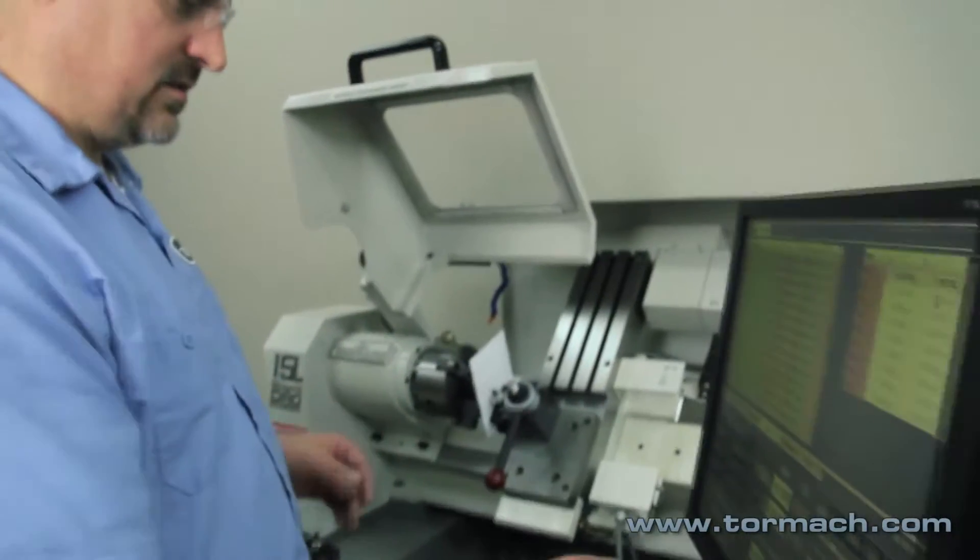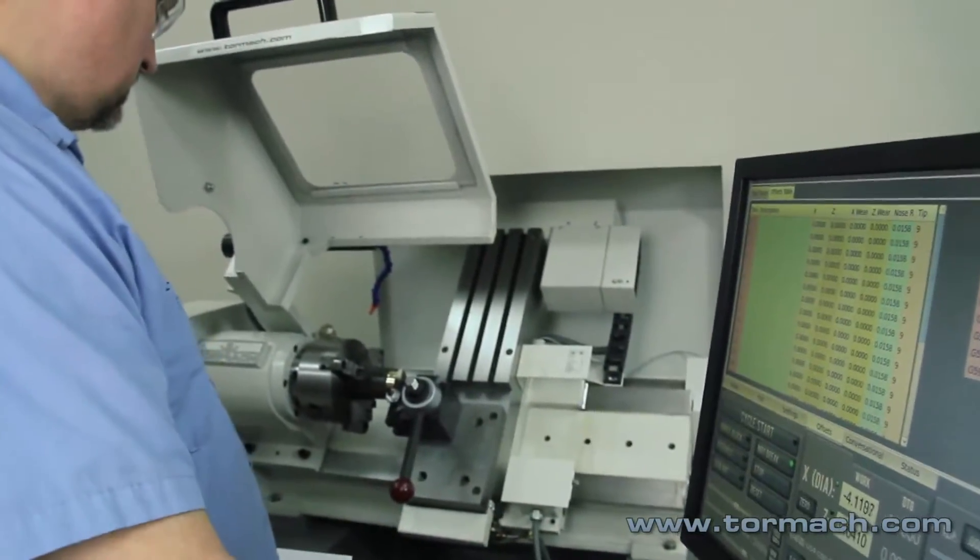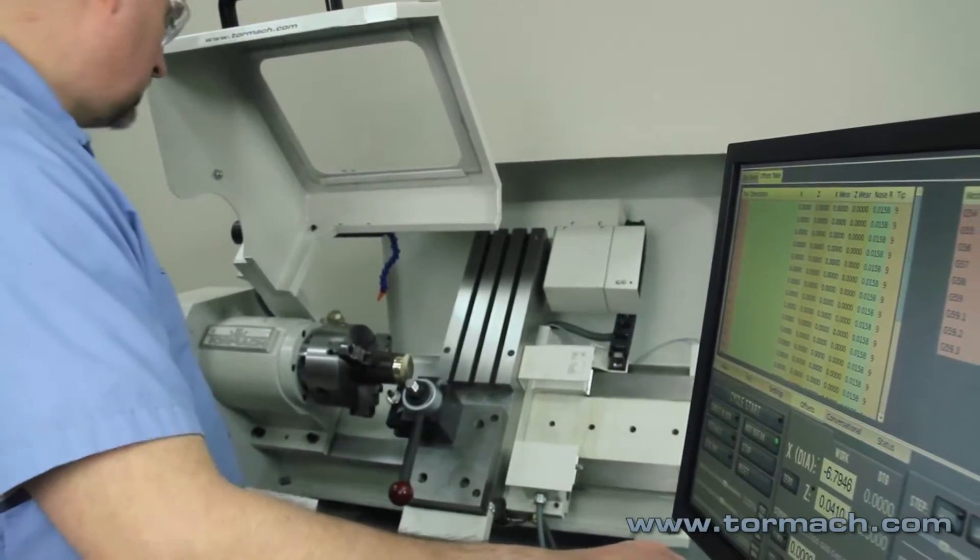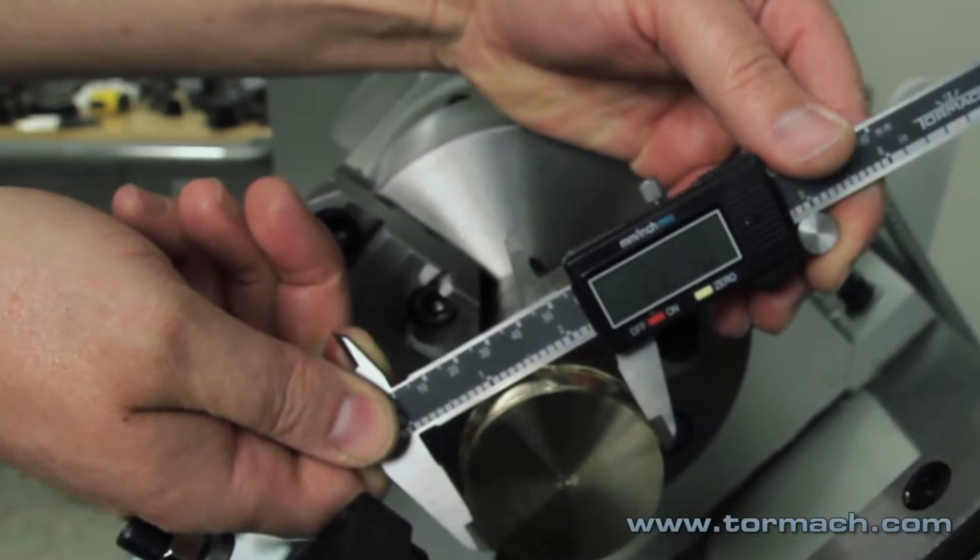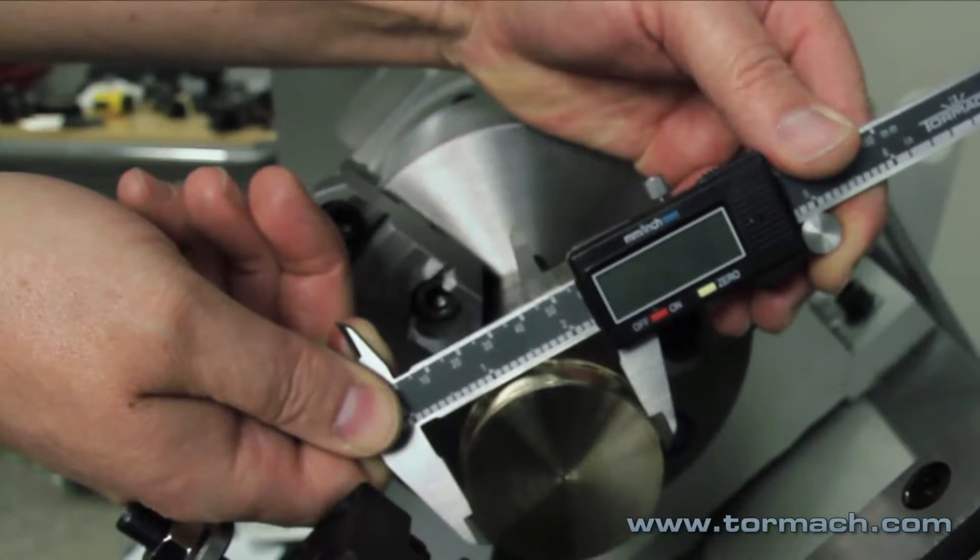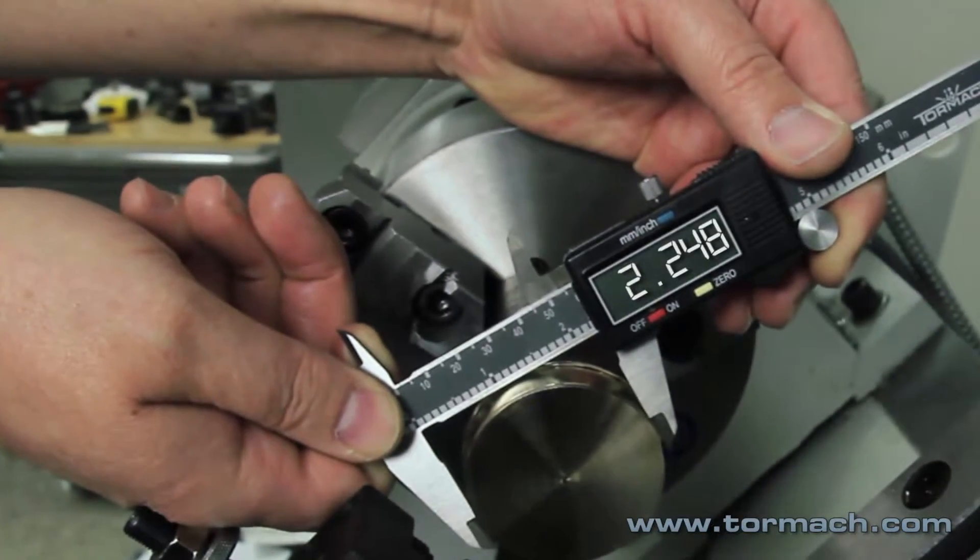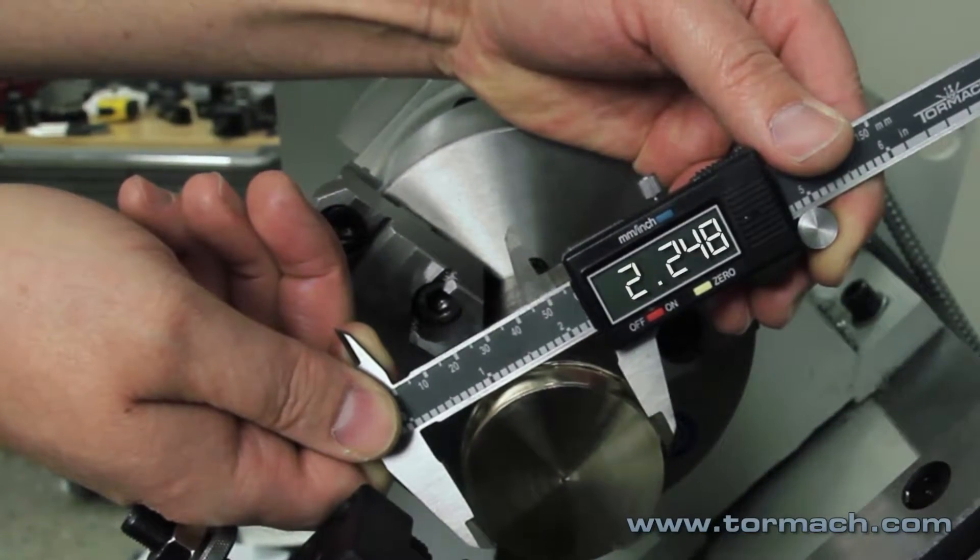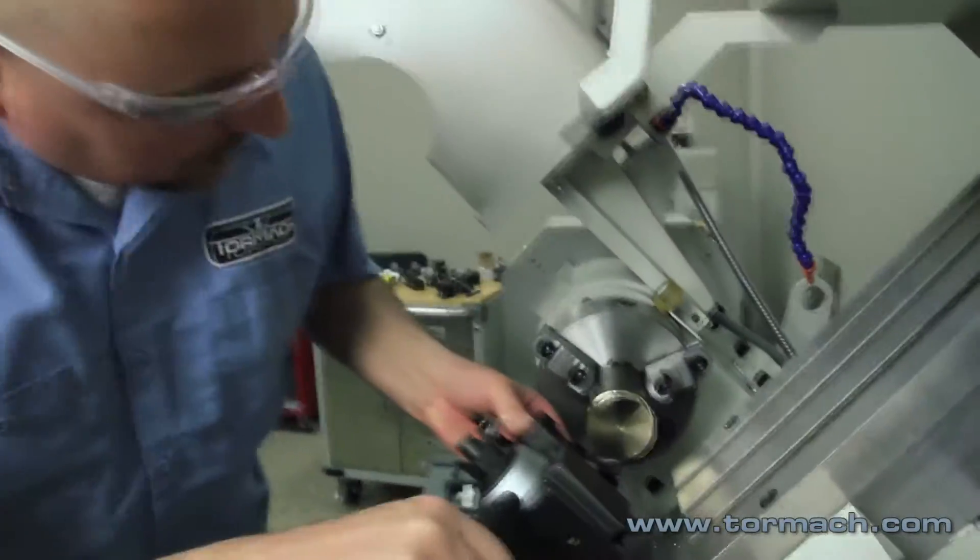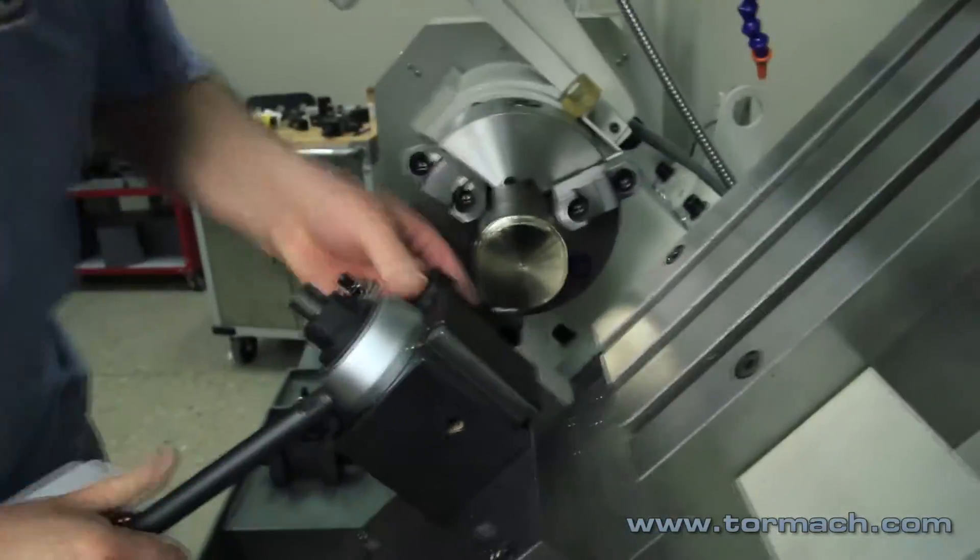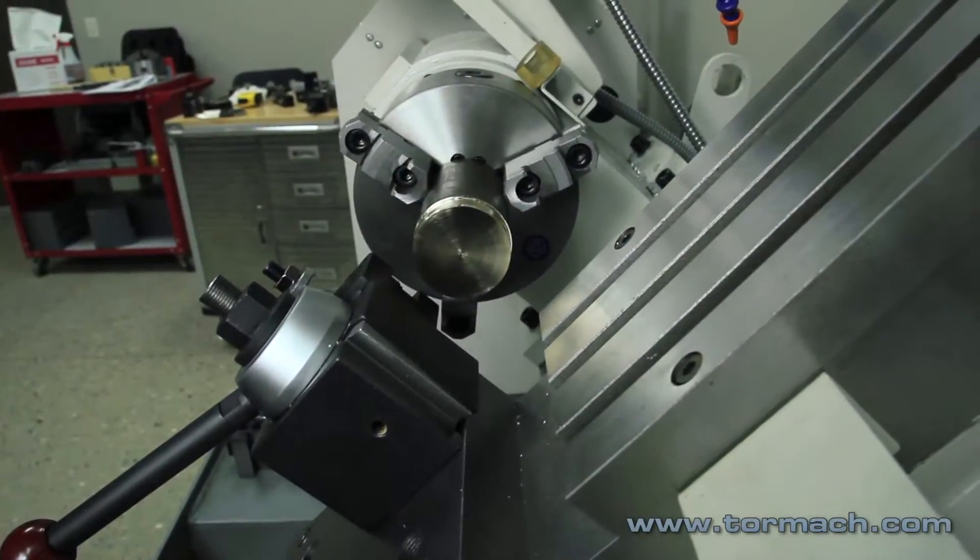Now we can do the same on the X. To touch off an X, you want to know what the diameter is. You need to know the diameter that you're touching off of. So we'll call that 2 inches 248 thousandths. And then I raise the tool holder up so the face of the tool holder would be at the tangent location to the diameter.